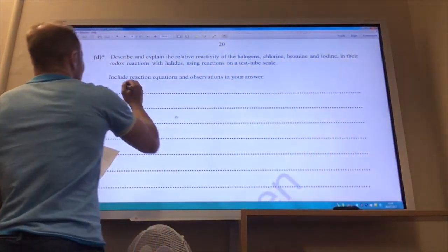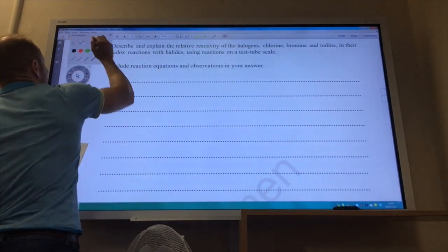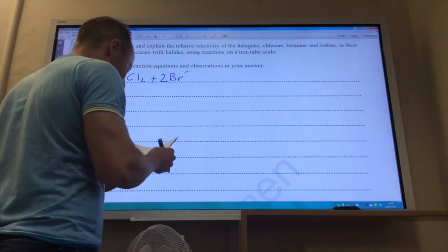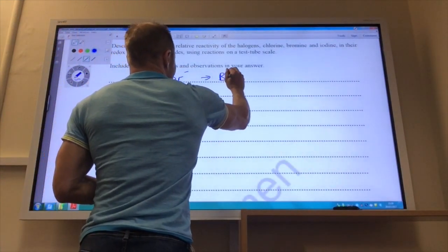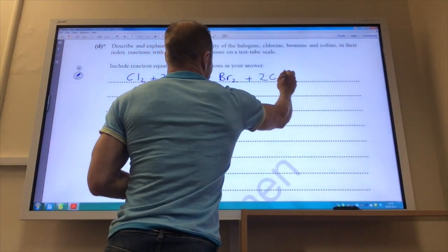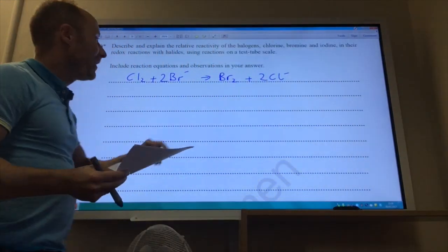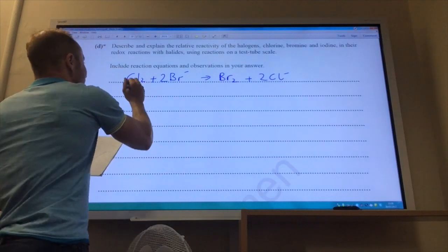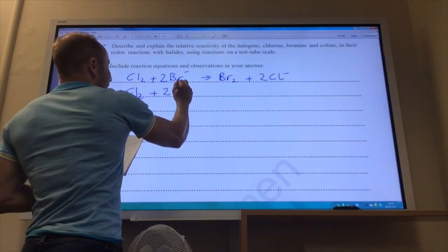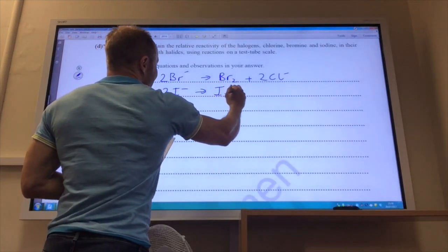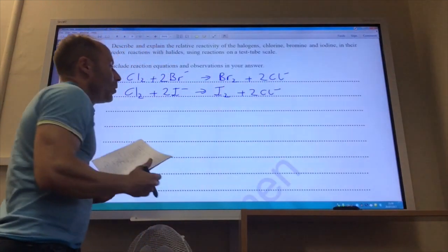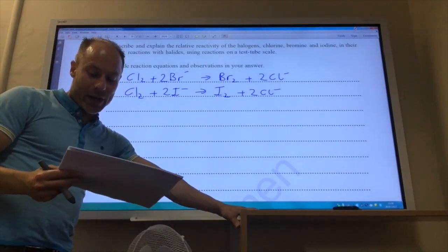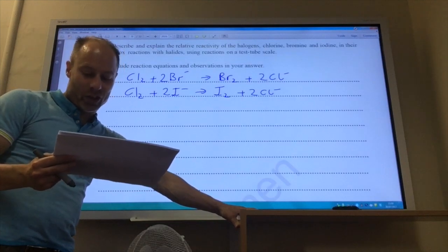How does that work in terms of reactions? Well, chlorine Cl2 will displace bromide ions Br minus to give you bromine and chloride ions. What would you see? Well, if this was done in aqueous solution, you would see bromine appear as an orange solution. Chlorine will also displace iodine ions to give you iodine plus 2 Cl minus. What would you see? Well, you would see iodine being displaced in aqueous solution, which would give you a dark orange solution.